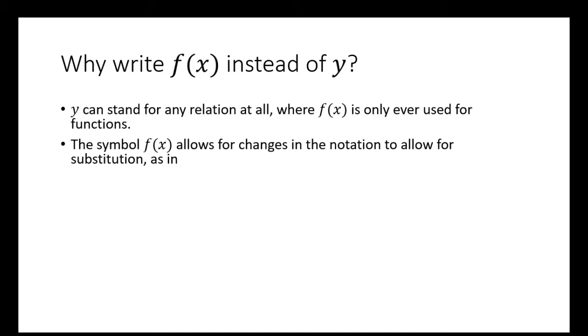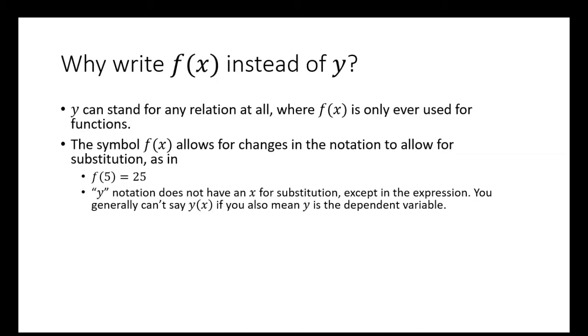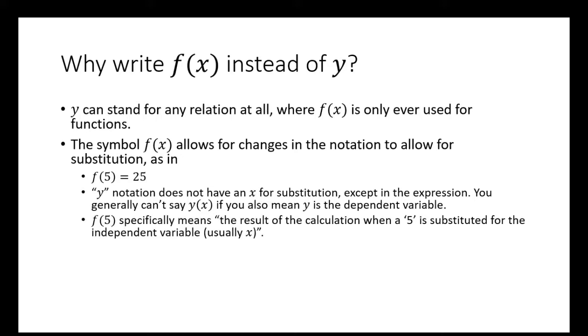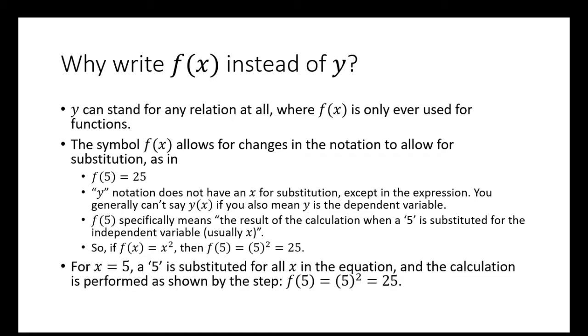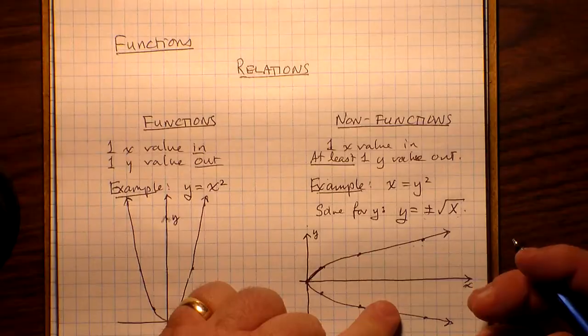The symbol f(x) allows for changes in the notation to allow for substitution, as in f(5) = 25. y notation does not have x for substitution except in the expression. You generally can't say y of x if you also mean y is the dependent variable. f(5) specifically means the result of the calculation when a 5 is substituted for the independent variable, usually x. So if f(x) = x², then f(5) = 5² = 25. For x = 5, a 5 is substituted for all x in the equation, and the calculation is performed as shown by the step f(5) = 5² = 25.